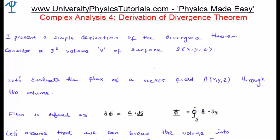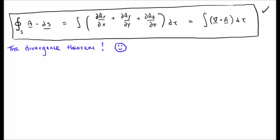Let's begin. I will try and present a reasonably simple derivation of the divergence theorem. It's probably useful to look at the result or the bottom line up front. The divergence theorem relates a closed surface integral of a vector field, let's say capital A, and it relates it to a volume integral involving the divergence of the vector field. In Green's theorem we went from a closed line integral to a surface integral. The divergence theorem is similar, except we're going from a closed surface integral to a volume integral involving the divergence of the vector field.